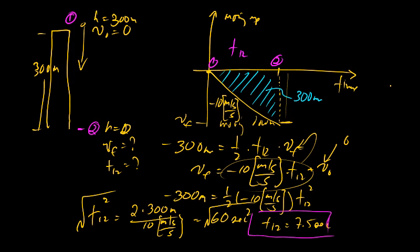I can then find, taking that and relating it to the final speed, that immediately gives me a final speed of negative 75 meters per second. The negative part is because it's down.